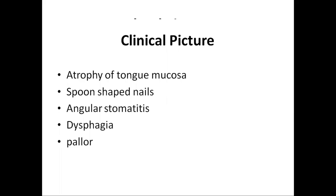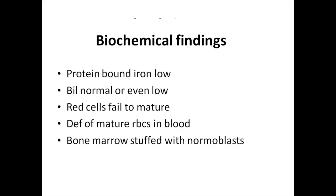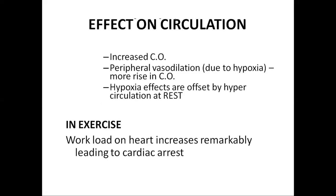The clinical picture of a patient with iron deficiency anemia includes: atrophy of the tongue mucosa, spoon-shaped nails where nails are depressed from the center and turned up from the sides, angular stomatitis, dysphagia, and pallor — which may be of the skin or palm creases. Biochemical findings include low protein-bound iron, bilirubin that is normal or even low. RBCs fail to mature, there is deficiency of mature RBCs in the blood, and the bone marrow is stuffed with normal blasts.